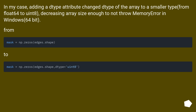In my case, adding a dtype attribute changed the type of the array to a smaller type — from float64 to uint8 — decreasing the array size enough to avoid the memory error in Windows 64-bit.